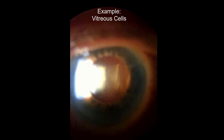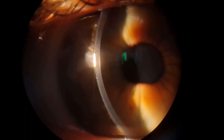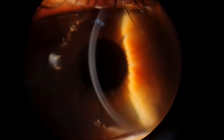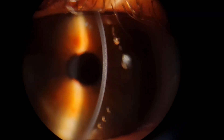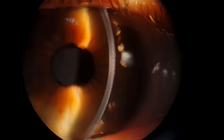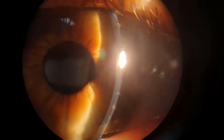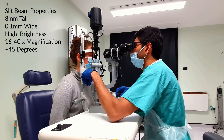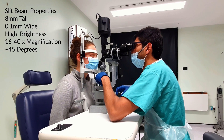If you use a thin narrow beam you can produce an optical section. This technique can help you to assess semi-transparent structures such as the cornea or lens. For this you should use a tall thin beam with high brightness intensity. Move the illumination arm to around 45 degrees and adjust appropriately.